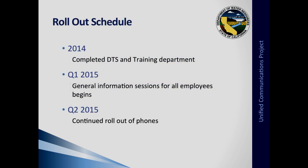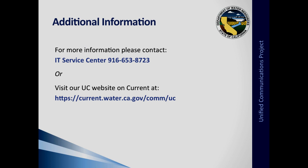Our telecom group has been very busy. In the last quarter of 2014 the telecommunications branch completed the rollout of the DTS and training VoIP phones. In the first quarter of 2015 general information sessions for all employees have begun, and we're continuing to roll out phones through the second quarter of 2015. For more information or problems, contact the service center at 653-8723 — once you have your new phone, that number will be 8-653-8723. You can also submit a miscellaneous problem ticket through AquaAssist or visit the UC website at current.water.ca.gov.